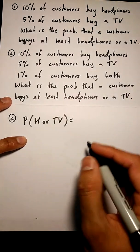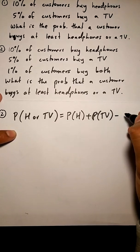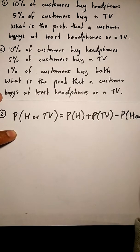So in this case, the probability that a customer buys at least headphones or TV is 0.145. Okay, pretty simple to do on a tree diagram.